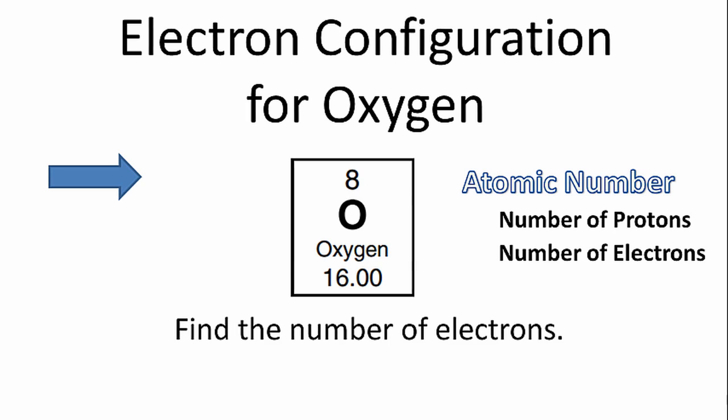That's the number that can be found above the element symbol on the periodic table. The atomic number equals the number of protons, but it also equals the number of electrons.